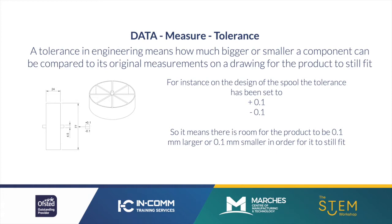One thing you need to understand when working in engineering is what the word tolerance means. For this particular product we have set a tolerance of plus or minus 0.1 millimetres. A tolerance in engineering means how much bigger or smaller a component can be compared to its original measurements. So if the width of the spool is 24 millimetres, a tolerance of plus or minus 0.1 means 24.1 or 23.9 millimetres will still fit. It means how much give or take there is on a particular measurement. The smaller the component, the smaller the tolerance will be.